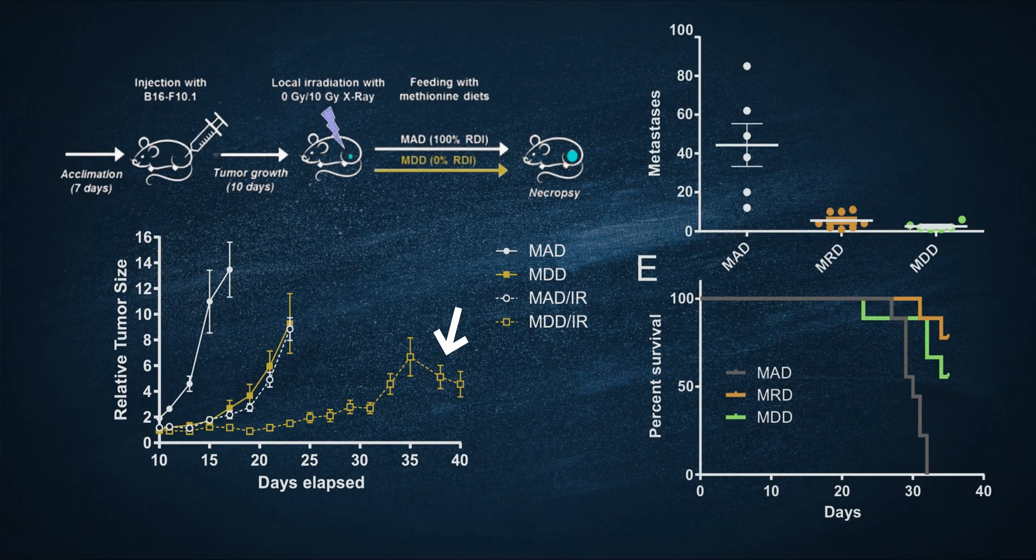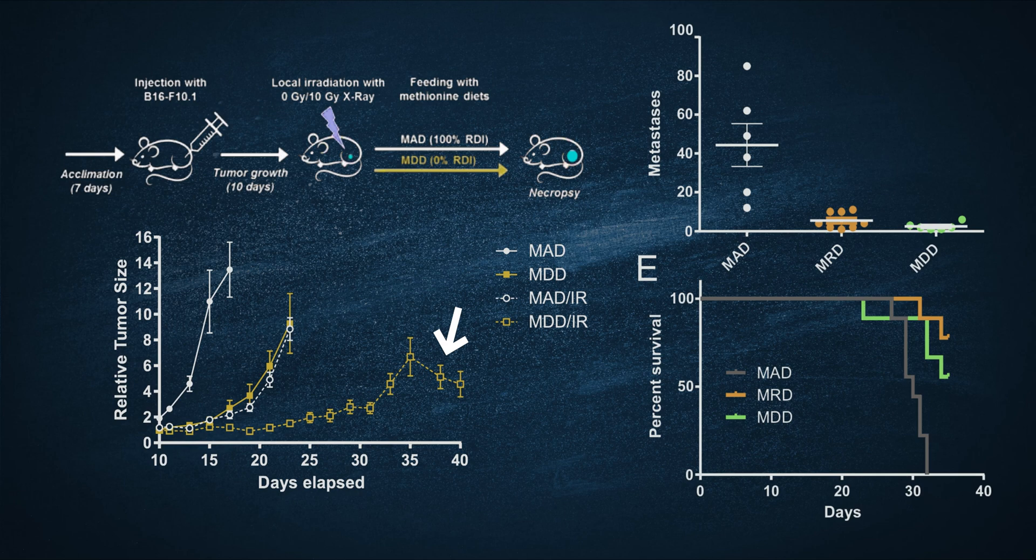In fact, if you look closely enough, you'll see that when a methionine deficient diet was combined with radiotherapy, tumor growth was brought to a complete halt. Something that clearly did not happen with radiotherapy alone, where the tumors continued to grow.